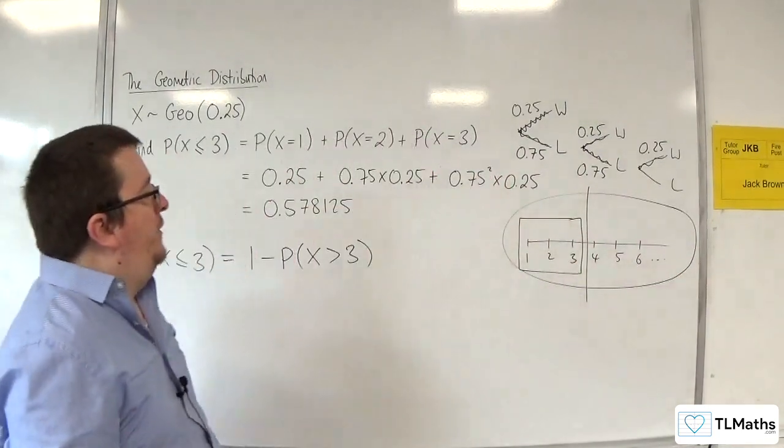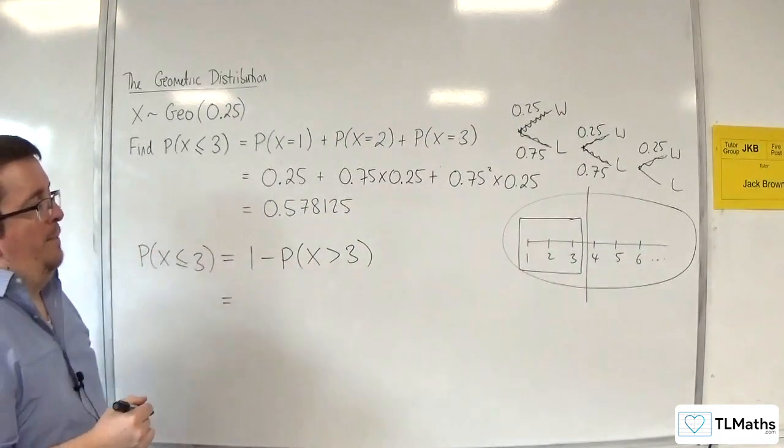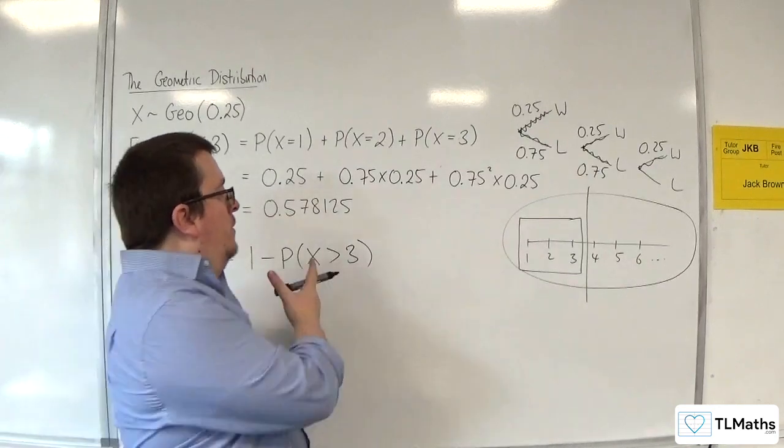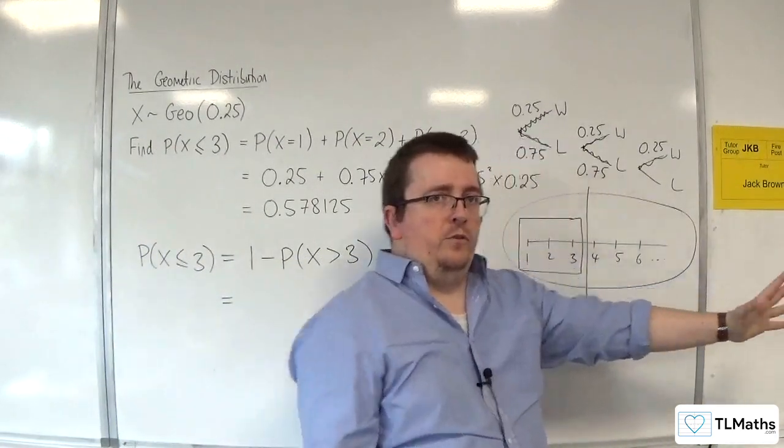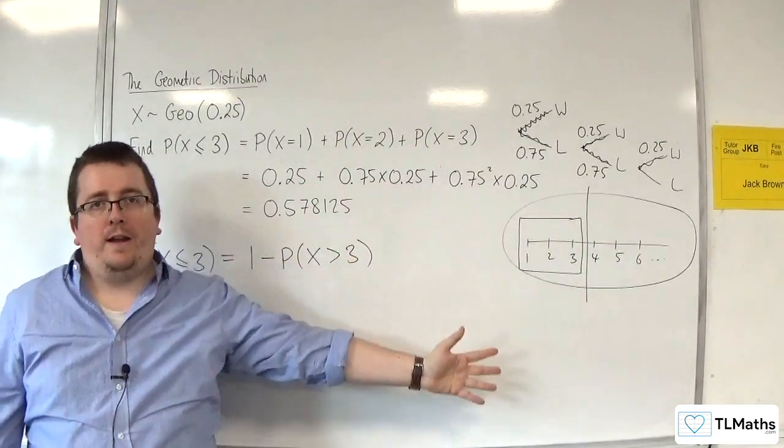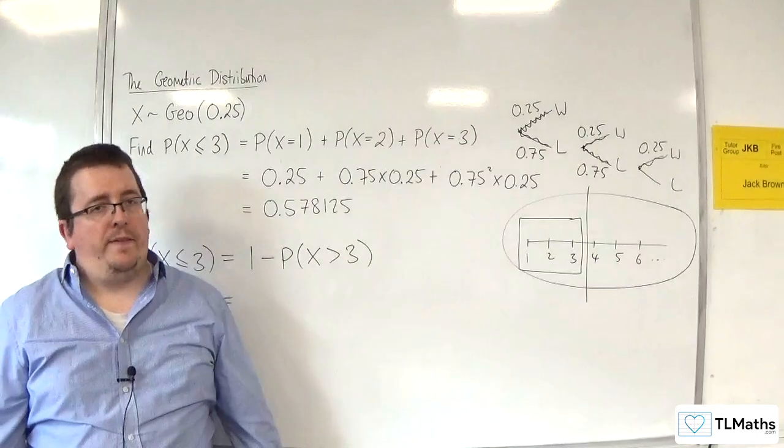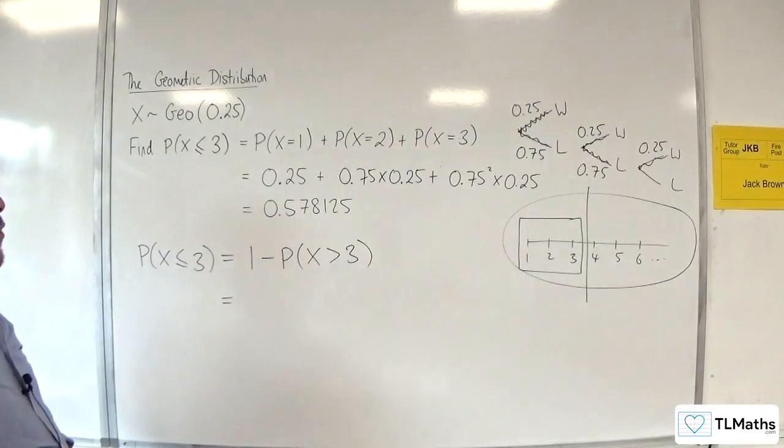Now, the problem is that you might be thinking, well, surely that complicates the problem, because greater than 3, 4, 5, 6, is all the way up to infinity, right? I can't actually work out all of those and add them all together. But let's have a think about what this means.